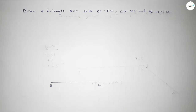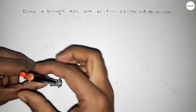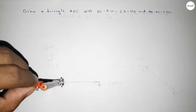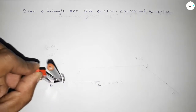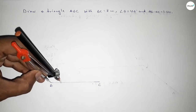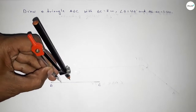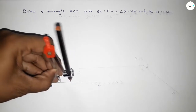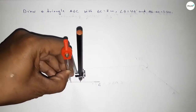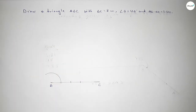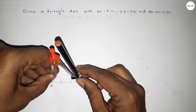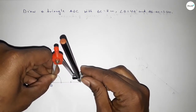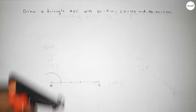Now we have to draw an 80 degree angle at point B. Putting the compass on point B, taking any length and drawing an arc. With the same length, putting the compass on that arc point and cutting again. With the same length, putting the compass there and cutting again. Now taking the length from point B to that point using the compass.